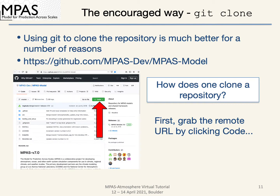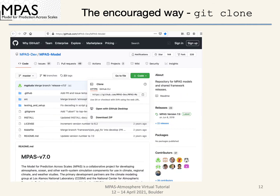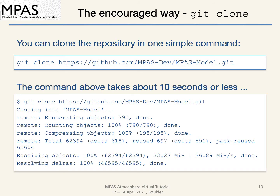Now onto the more encouraged way of downloading the MPAS source code: cloning the GitHub repository. There are a number of benefits of using Git, but first, how do you clone a repository? Navigate to the MPAS model repository and click Code. Then copy the repository URL to your clipboard. Be sure not to download the zip file or open with GitHub Desktop, as those are not cloning. Once you have the URL, open your command line and run the git clone command as shown. The command will take about 10 seconds to complete and will download the source code completely.